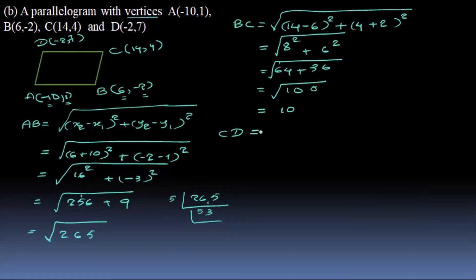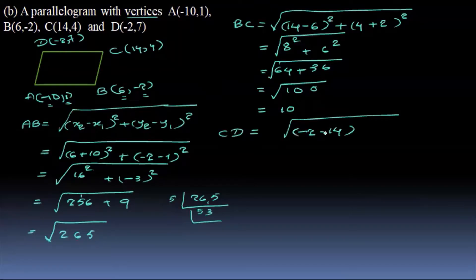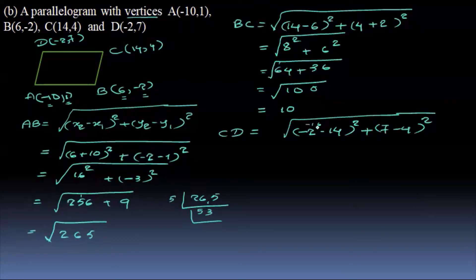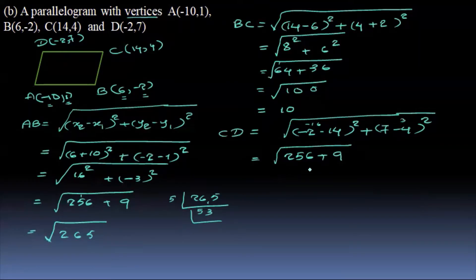For CD: square root of (-2 minus 14) whole square, plus (7 minus 4) whole square. So minus 2 minus 14 is minus 16, the whole square, plus 7 minus 4 is 3, the whole square. CD is equal to square root of 265.